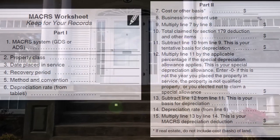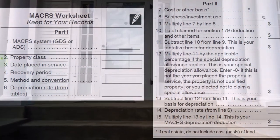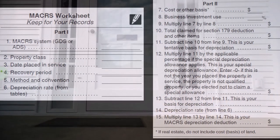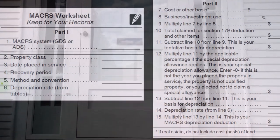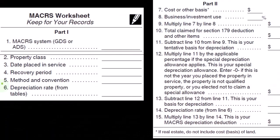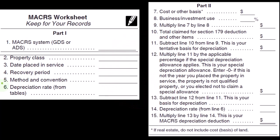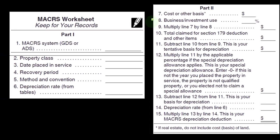So the worksheet has: the MACRS system — GDS or ADS — property class, date placed in service, recovery period, method and convention, and depreciation rate. A lot of this would be driven by the type of property you're putting in place and the defaults you would choose, unless you were electing otherwise — such as double declining balance, unless you wanted to switch to straight line for whatever reason. And then you have the cost or basis, and then the basis divided by the investment use percentage.